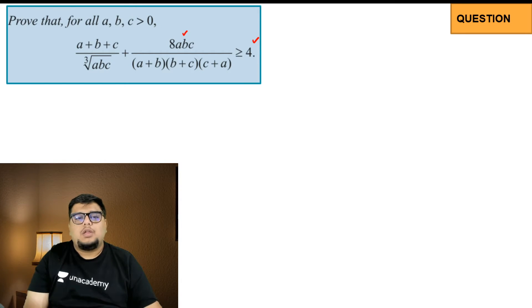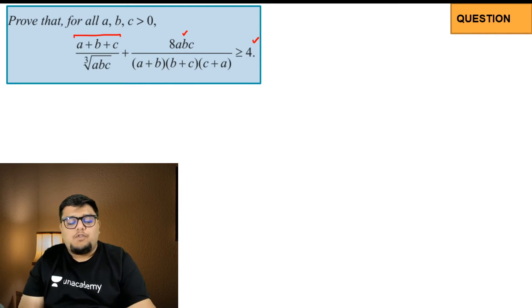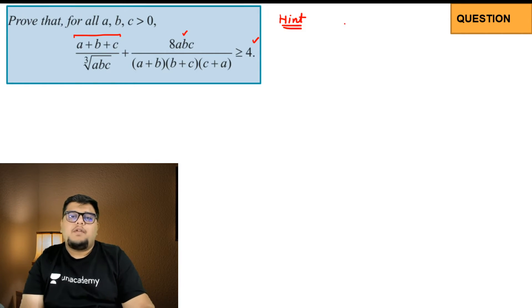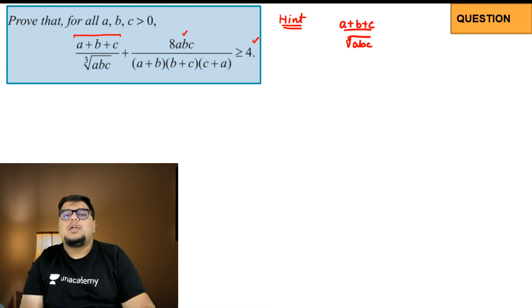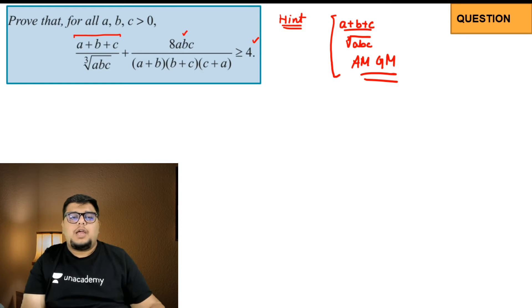So we have (a+b+c) on this side. Before we start off with this question, I would like to give you some hints and I would love if you guys attempt it yourself — that will be a really good exercise. The first hint: take the term (a+b+c) divided by the cube root of abc separately, and try cubing it to see what you can work out. AM-GM inequality is also going to help here. These are really big hints — you can pause the video now and try to solve it yourself.